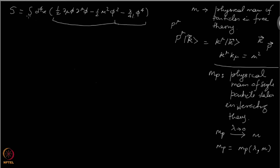What parameterizes this action? That is lambda and m. So the physical mass has to be parameterized by lambda and m. That is a story we are not going to discuss in this course, but one should be aware of this fact.